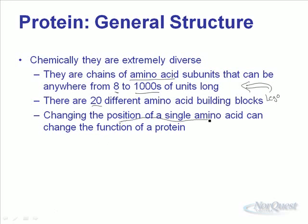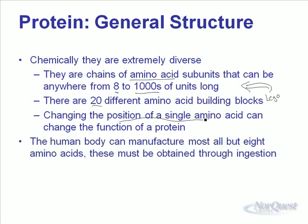Changing even the position of a single amino acid can affect the whole function of a protein — usually for the worse. Because the shape of a protein is so important, moving even one amino acid can change the entire shape of the molecule. The human body can manufacture most of these amino acids, but there are eight that we can only get through ingestion. These are essential amino acids that we can't make ourselves, so we have to ingest them through foods like salmon and other fatty fish.